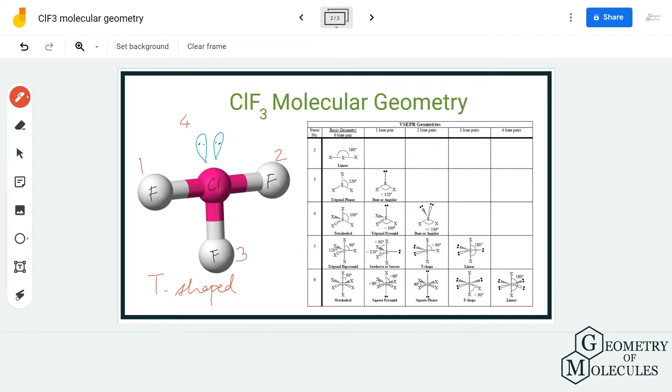three fluorine atoms so there are three regions of bonds and there are two non-bonding pairs of electrons and hence there will be a total of five electron regions around the central atom and hence the steric number will be